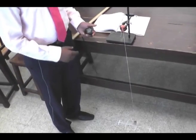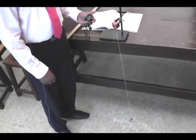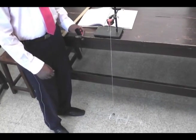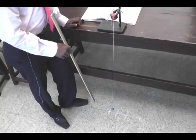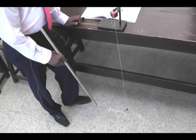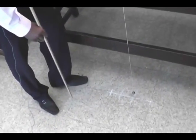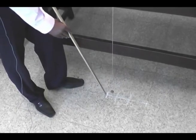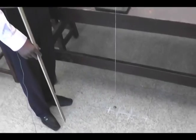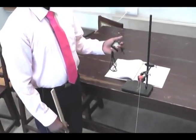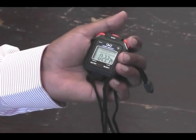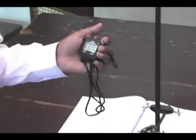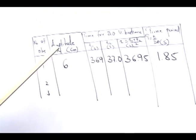Students, we now start the experiment. The pendulum is already set in oscillation. We consider an amplitude of 6 centimeters and begin counting up to 20 oscillations: 0, 1, 2, 3, 4, 5, and so on up to 20 vibrations. We then note down the time for 20 oscillations in the table of observations and calculations.